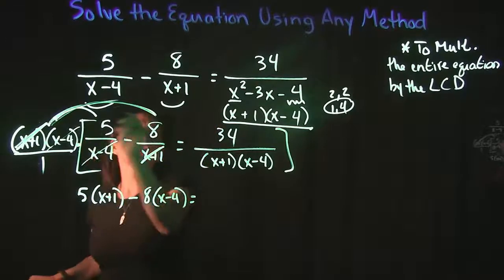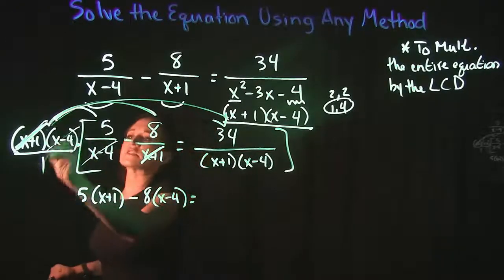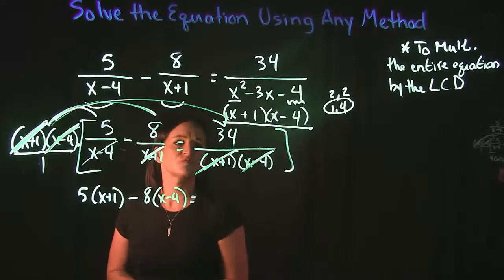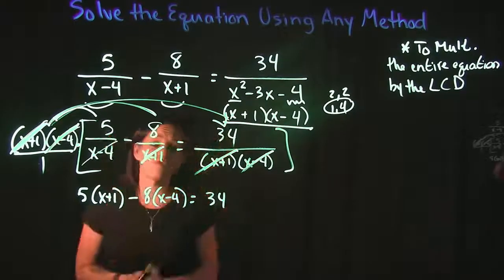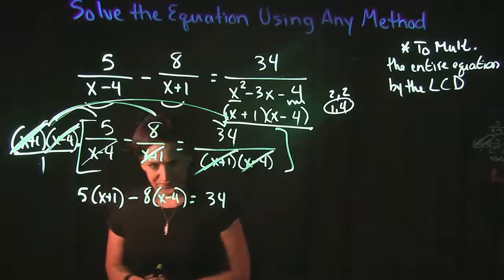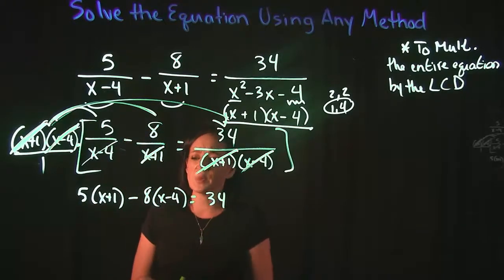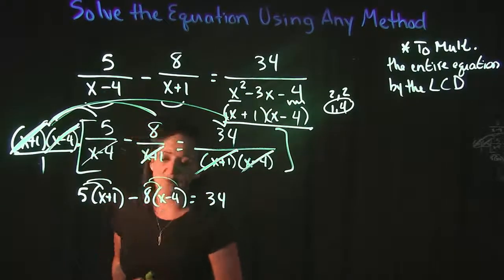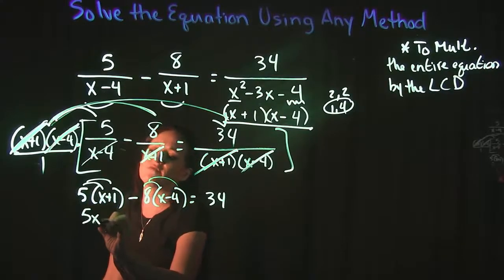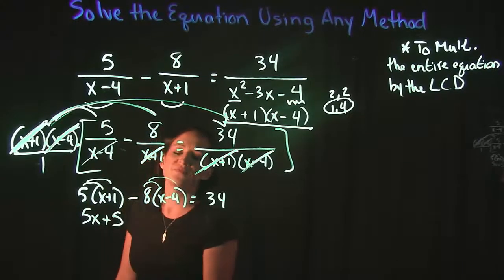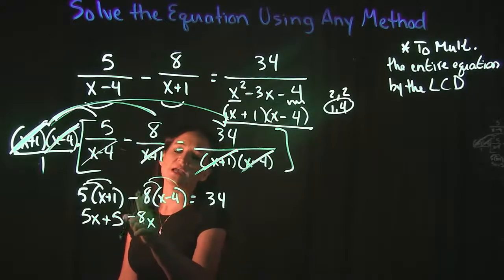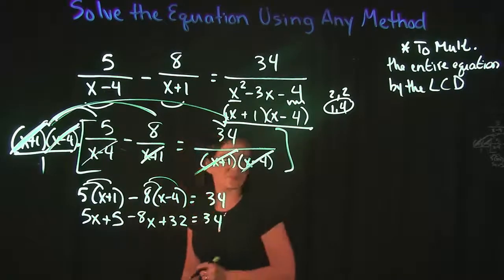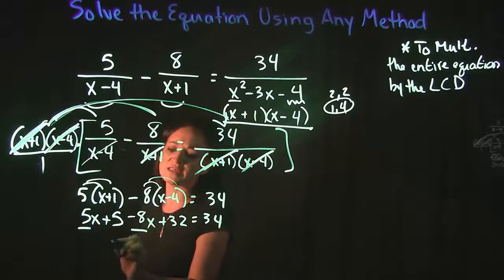Otherwise, we just need to continue doing some cleanup with our problem here. So we have this 5 that we can distribute. We also have this minus 8 that we can distribute. So 5 times x is 5x, plus 5 times 1 is 5. Negative 8 times x gives me negative 8x. Negative 8 times negative 4 is a positive 32, and that is going to equal 34. Combining like terms, 5x minus 8x is a negative 3x. 5 plus 32 gives me a 37, and that equals 34.